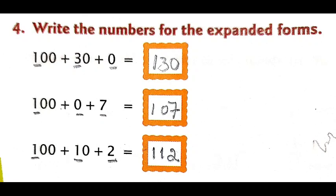Now the second question: 100 plus 0 plus 7. Come on children, which digit do we underline? In 100, underline 1. Then 0 in the tens place and 7 in the ones place. So we get 1, 0, 7 — that is 107.